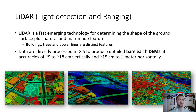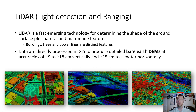LiDAR can track man-made features with high efficiency and detail — everything as small as a fire hydrant or a power line. Data are directly processed in GIS to produce detailed bare-earth DEMs with accuracies of 9 to 18 centimeters vertically and 15 centimeters to 1 meter horizontally, and those resolutions are increasing year by year.